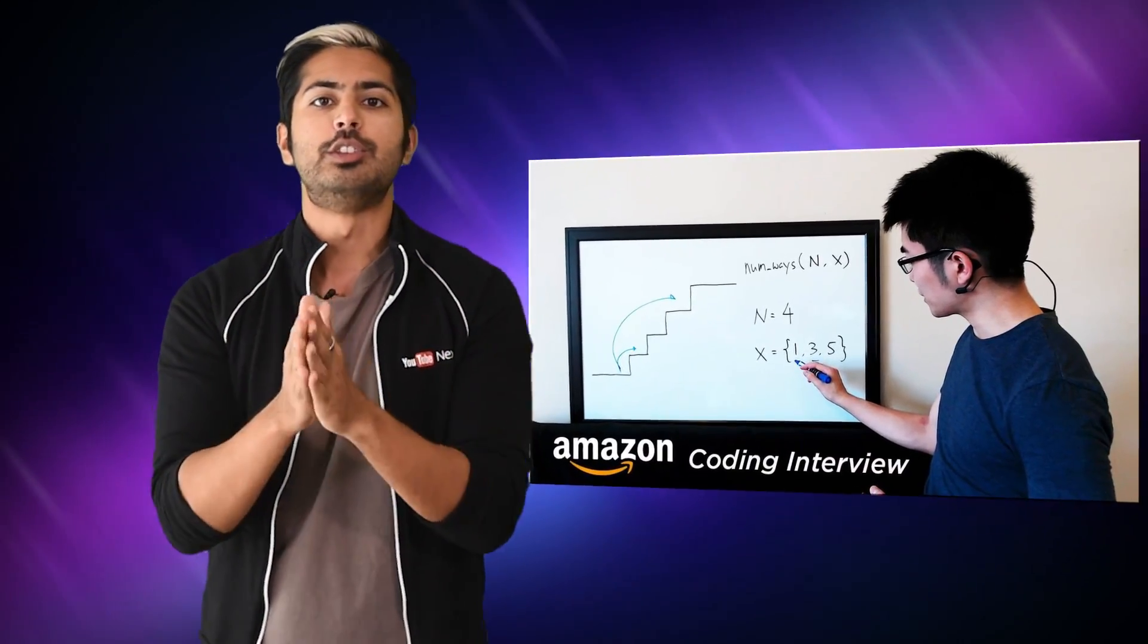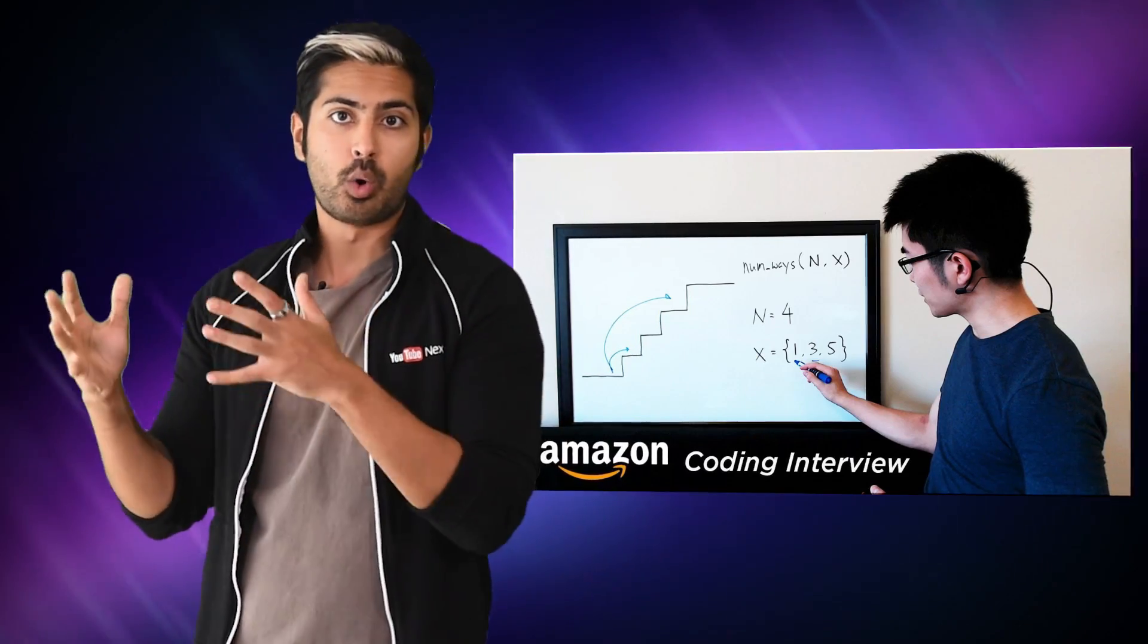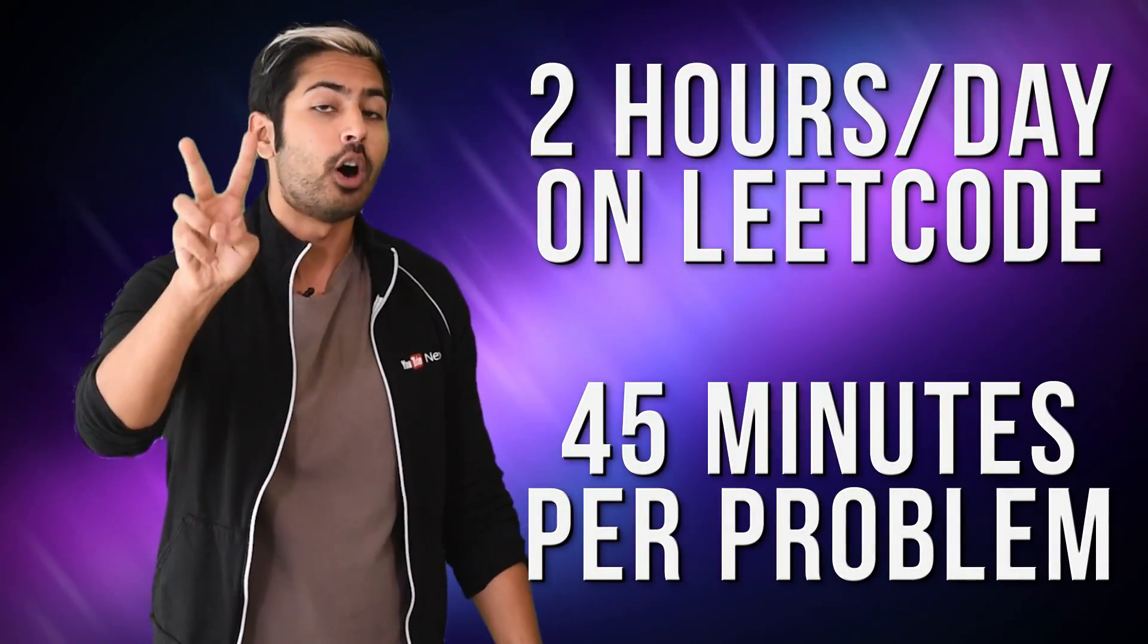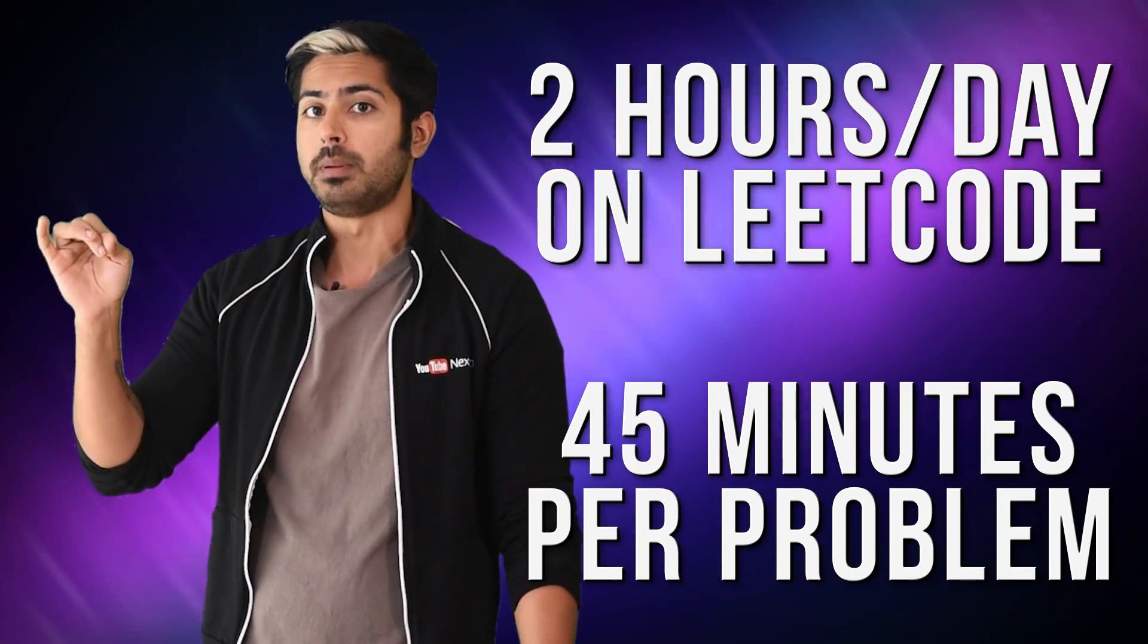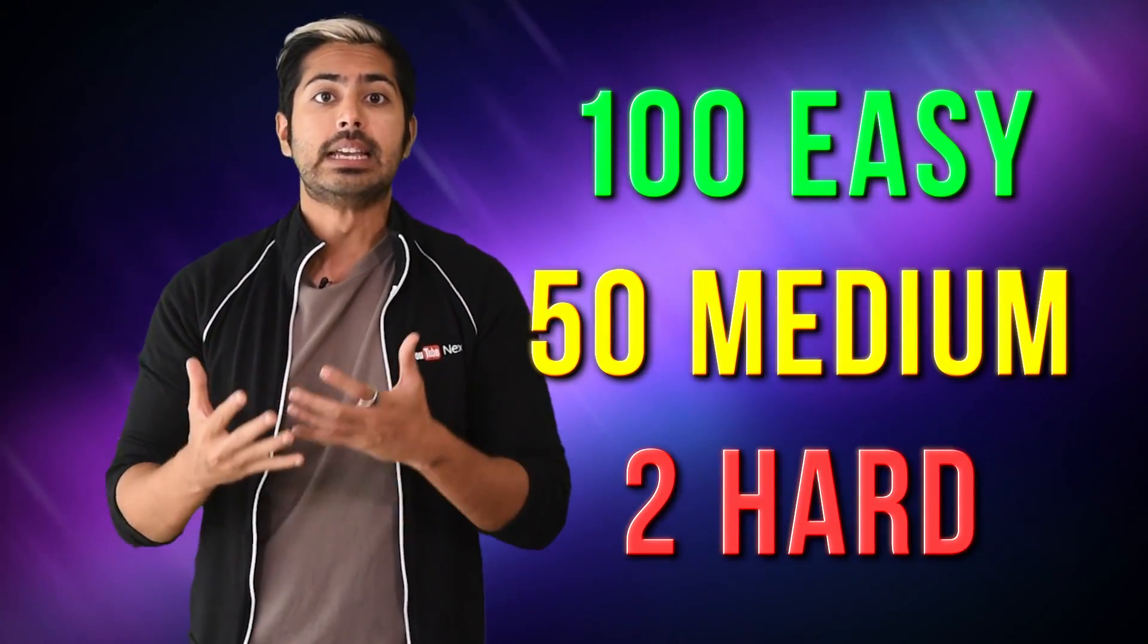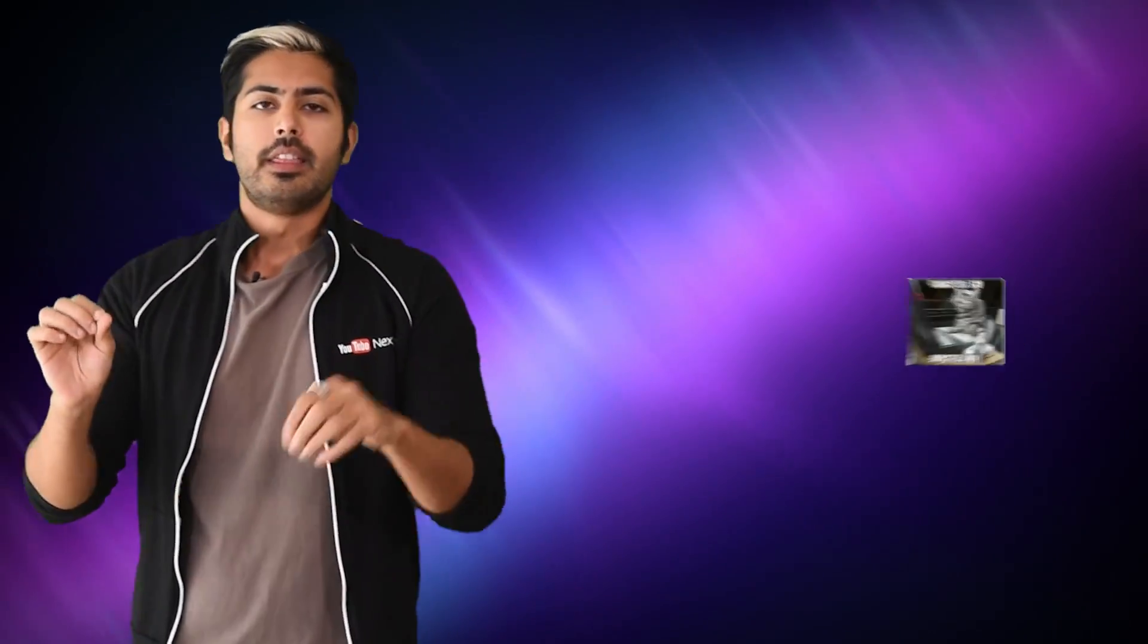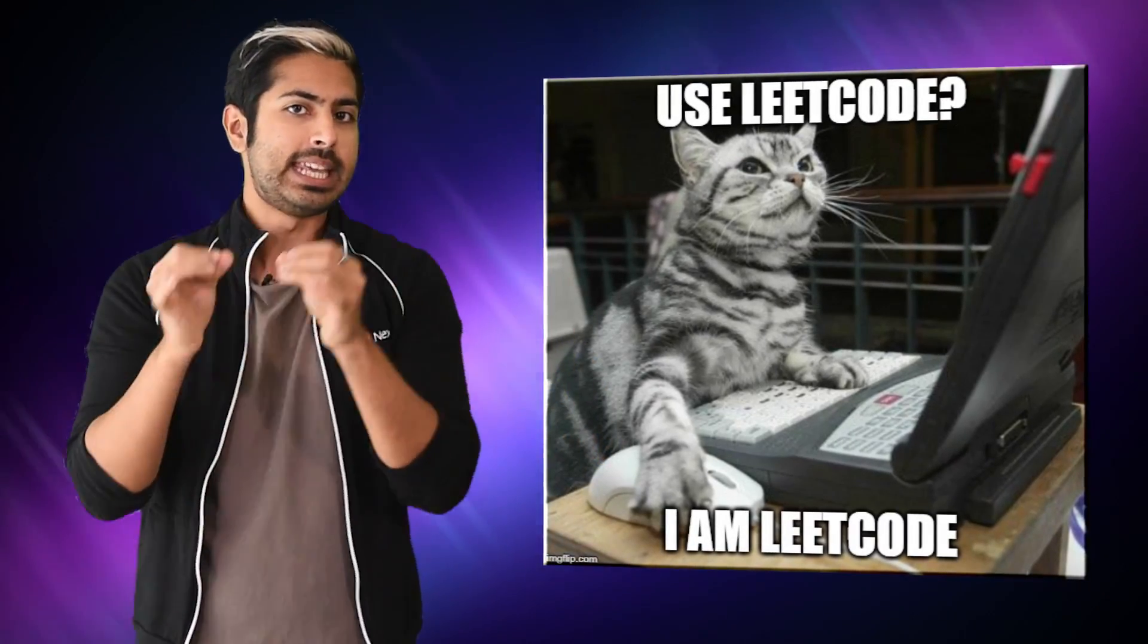Also buy a whiteboard and do some of those problems on it. Doing so is good practice for the actual interview, which will be on a whiteboard and helps you visualize concepts like dynamic arrays or hash maps. You should spend at least two hours a day solving these problems and give yourself a maximum of 45 minutes to solve each problem since you'll also be timed during an interview. In general, people who got offers from big tech companies completed up to 150 of these questions beforehand. Complete 100 easy questions, 50 medium, and 2 hard.